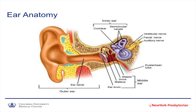The middle portion of the ear, which is right here, is composed of the eardrum, as well as three tiny little ear bones that are connected. And finally, the inner ear consists of various structures, including the cochlea, the balance canals, and the hearing nerve.